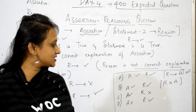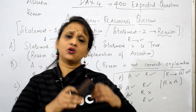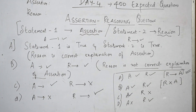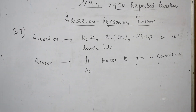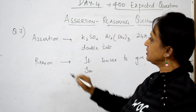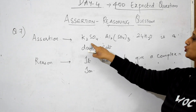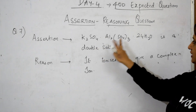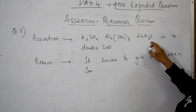Shall we see one example, students? Let us rub this board and see one example and check whether we have understood. If you understand this concept, all the assertion reasoning questions would be easy for you all. Now let us see question number 7 for day 4 based on assertion reasoning. They have given you a double salt — potassium sulfate, aluminium sulfate — with 24 H₂O as a double salt. That is the assertion.